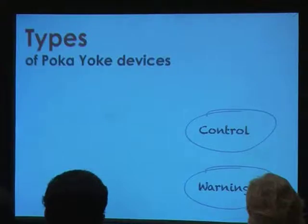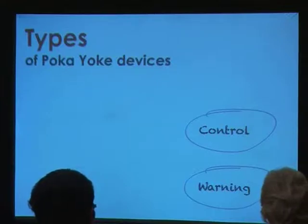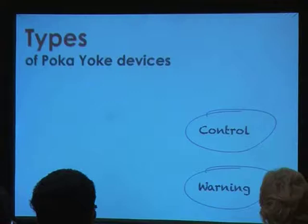A Warning Pokayoke means that the moment an error occurs, it is going to flash some sort of a message or warning to tell you that you made a mistake. In an ideal world, we would like things to never go wrong, so we would try and aim for Control Pokayokes as much as possible, but as we proceed you will realize instances where it makes more sense to have Warning Pokayokes.